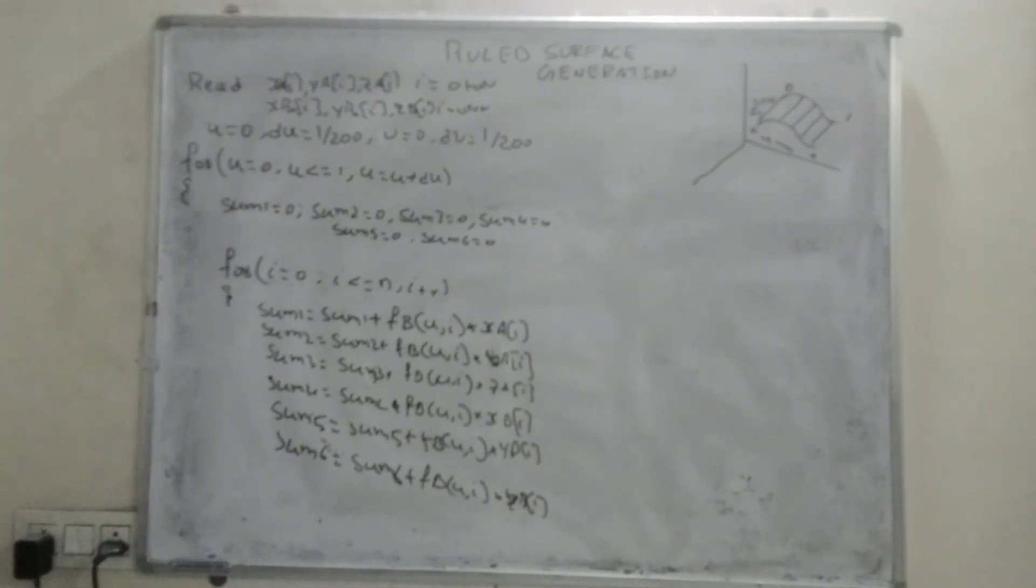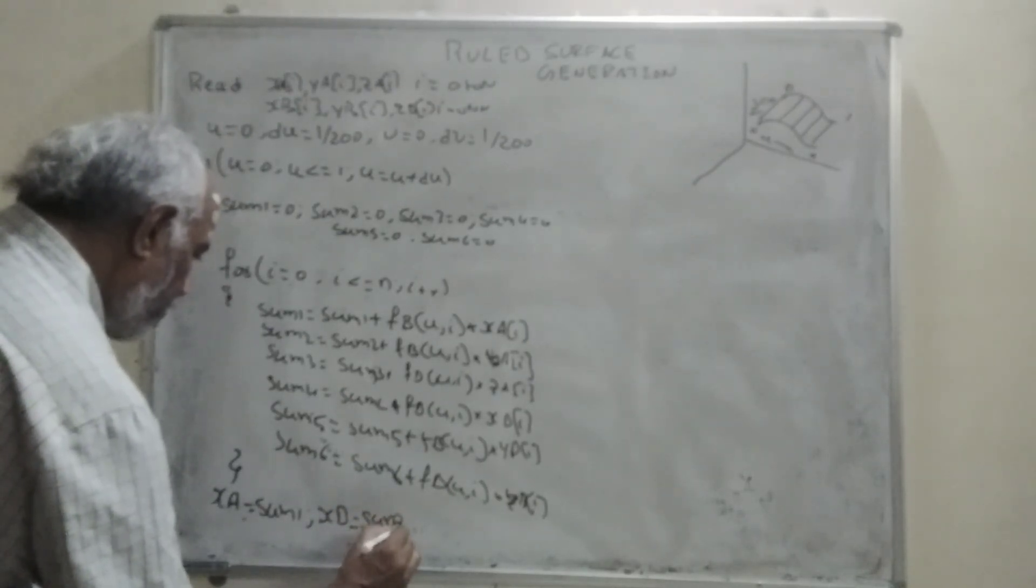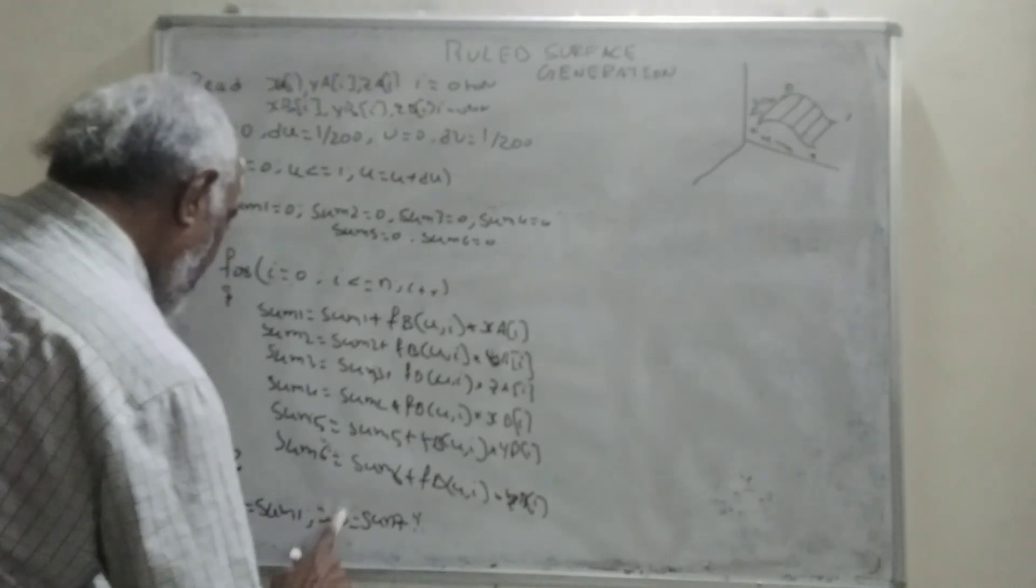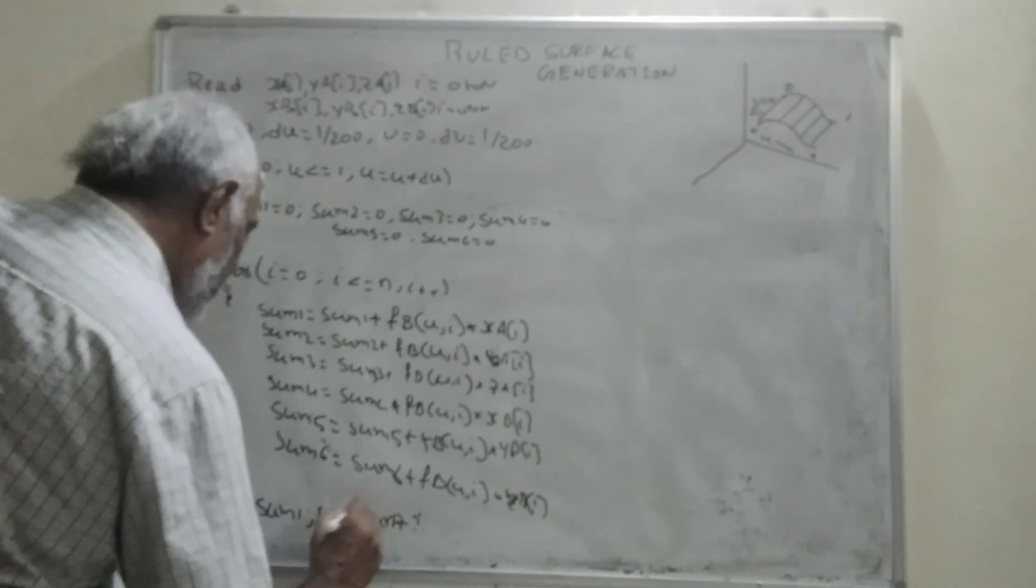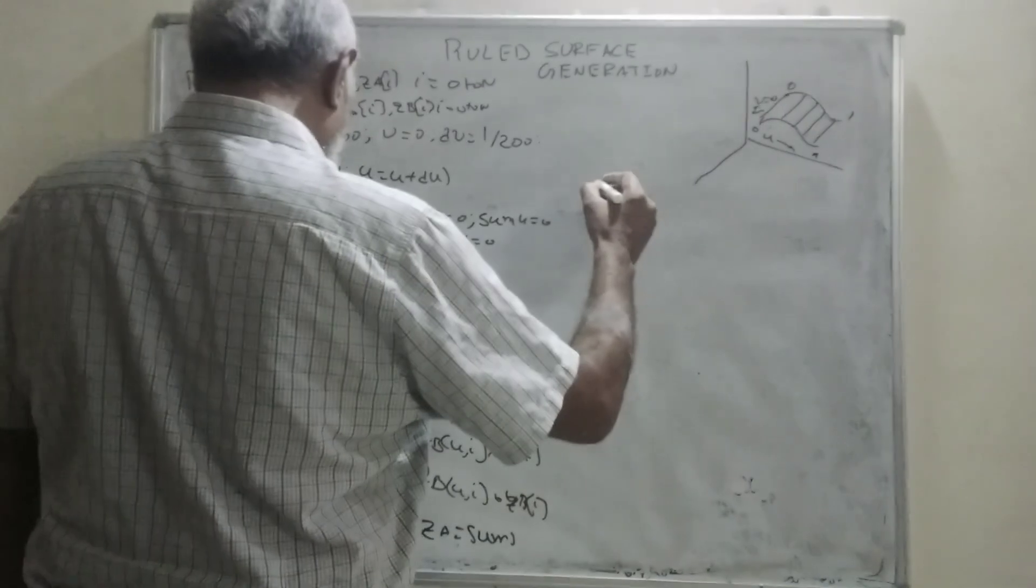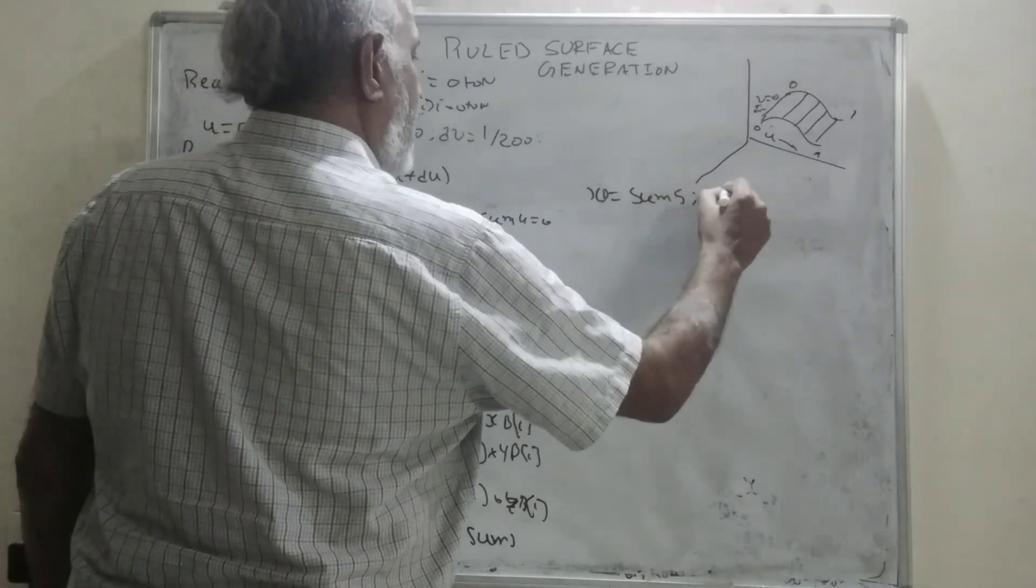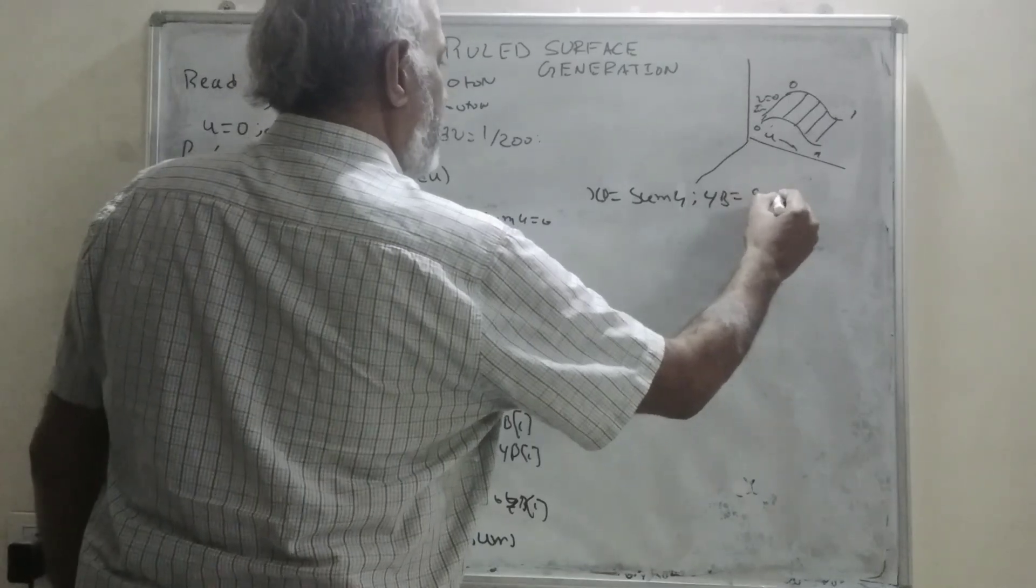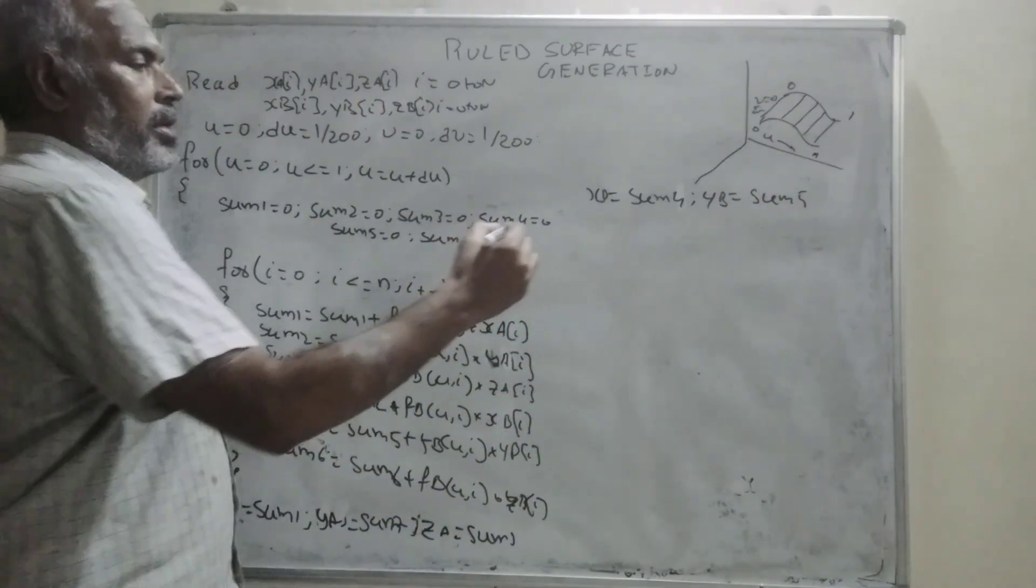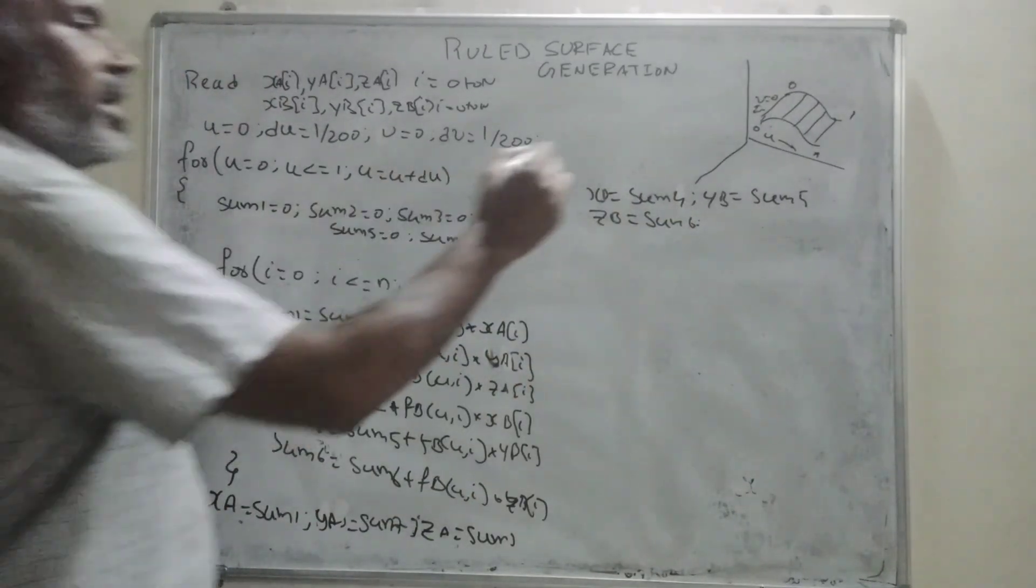This is repeated for loop and after calculation of this for loop, now I am trying to write one point on this: x_a equals sum1, y_a equals sum3, z_a equals sum3. Here x_b equals sum4, y_b equals sum5, and z_b equals sum6. I have got two points, one point here and another point here.